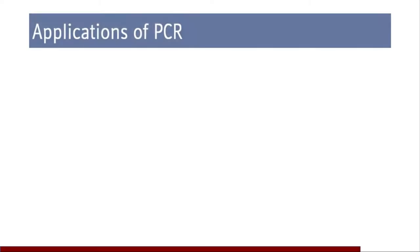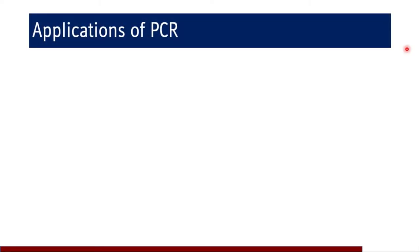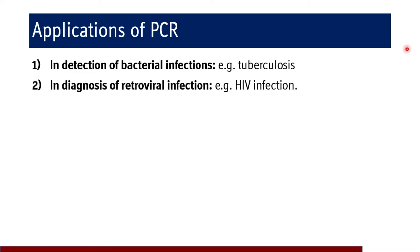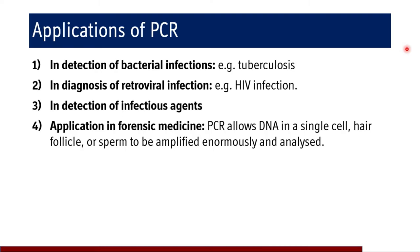Coming to the applications of PCR, it is employed in detection of bacterial infections. We use tubercular antigen studies for detection of tuberculosis. We use PCR technique in diagnosis of retroviral infections — HIV and HBCC infection can be detected with PCR. In detection of infectious agents also we employ this technique, and it has application in forensic medicine.